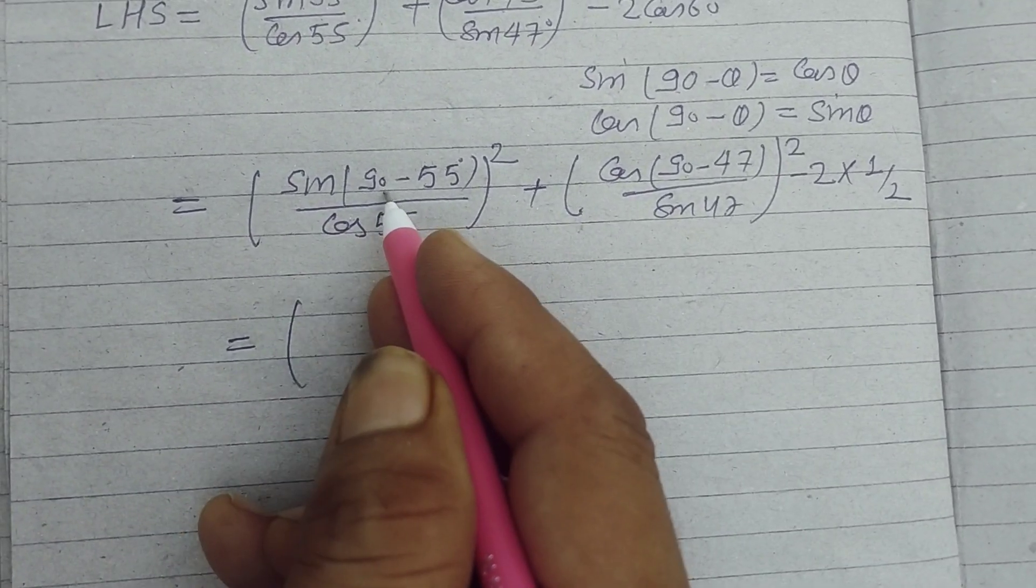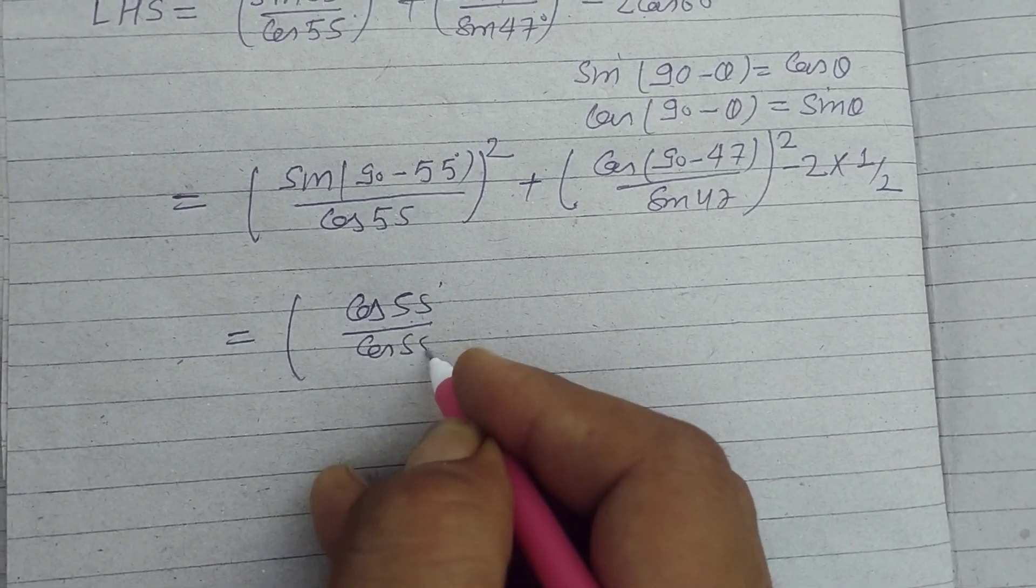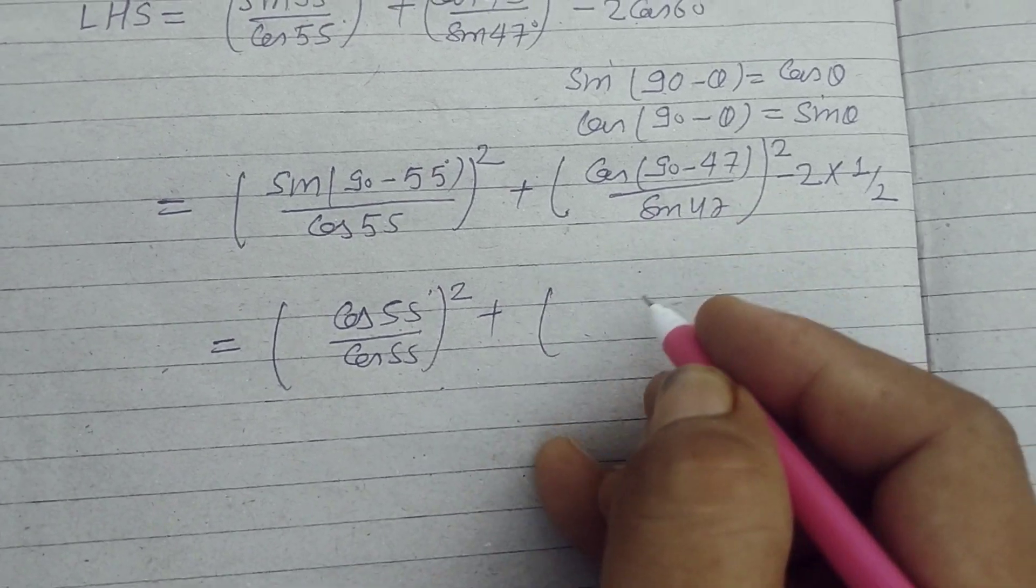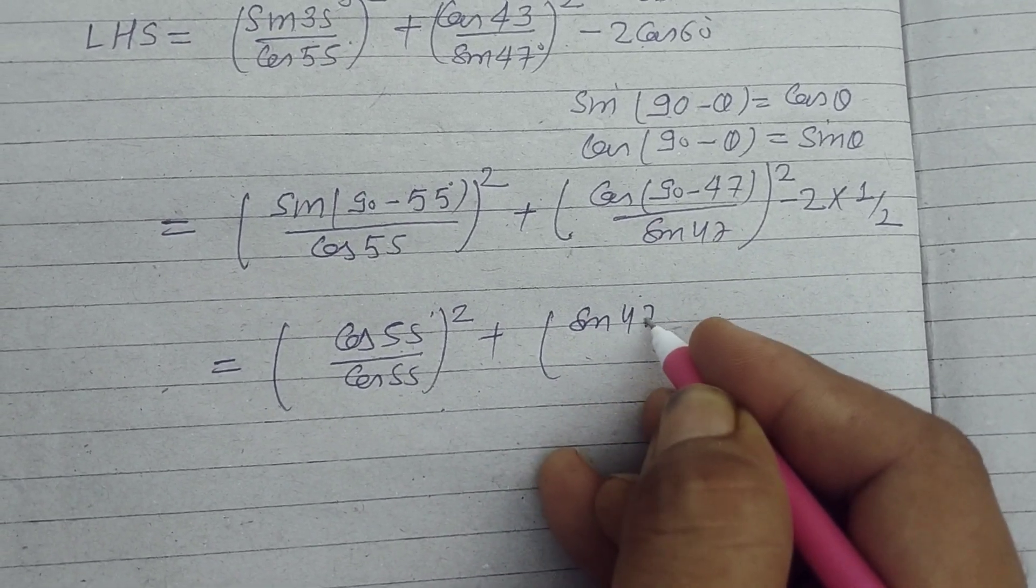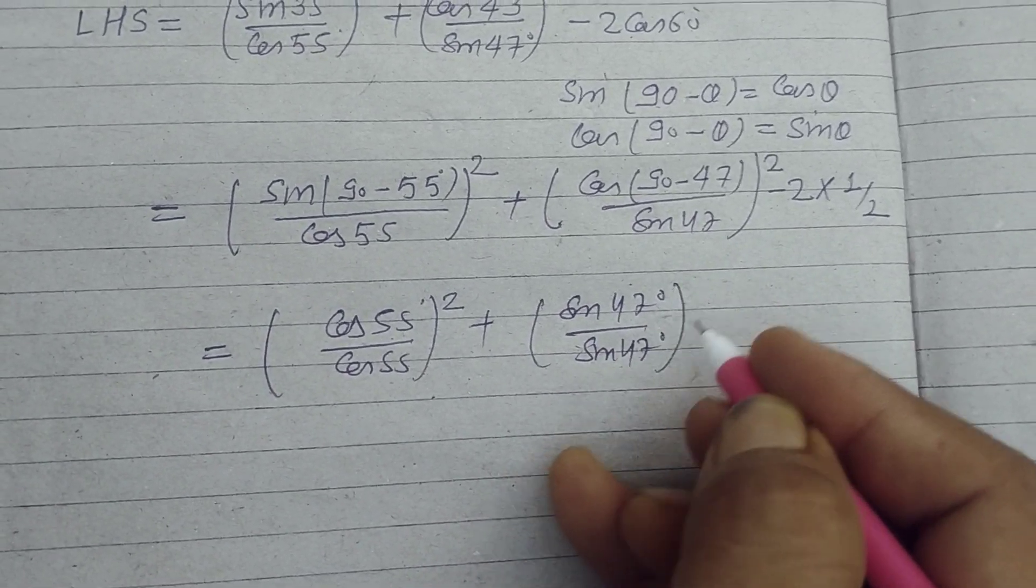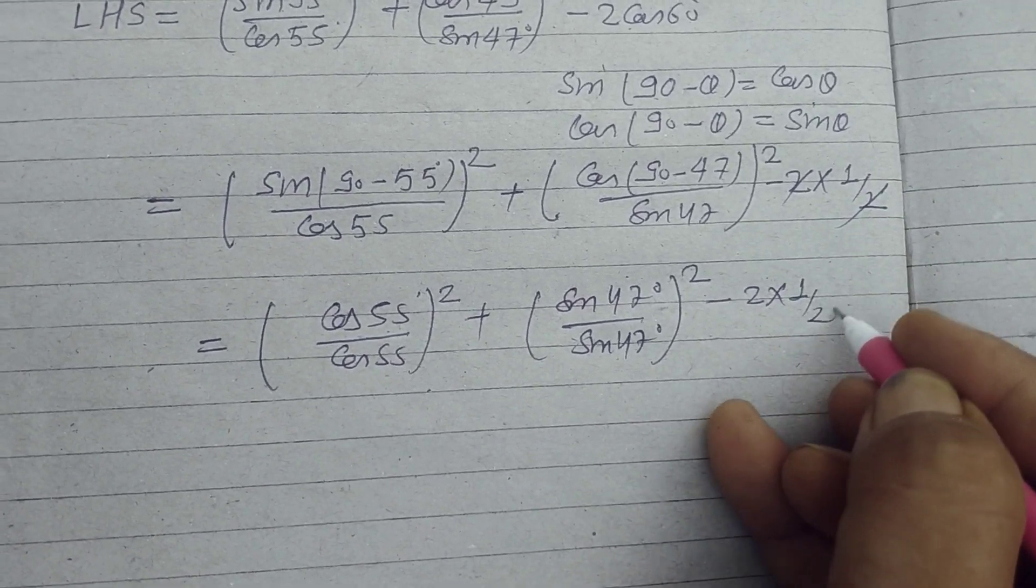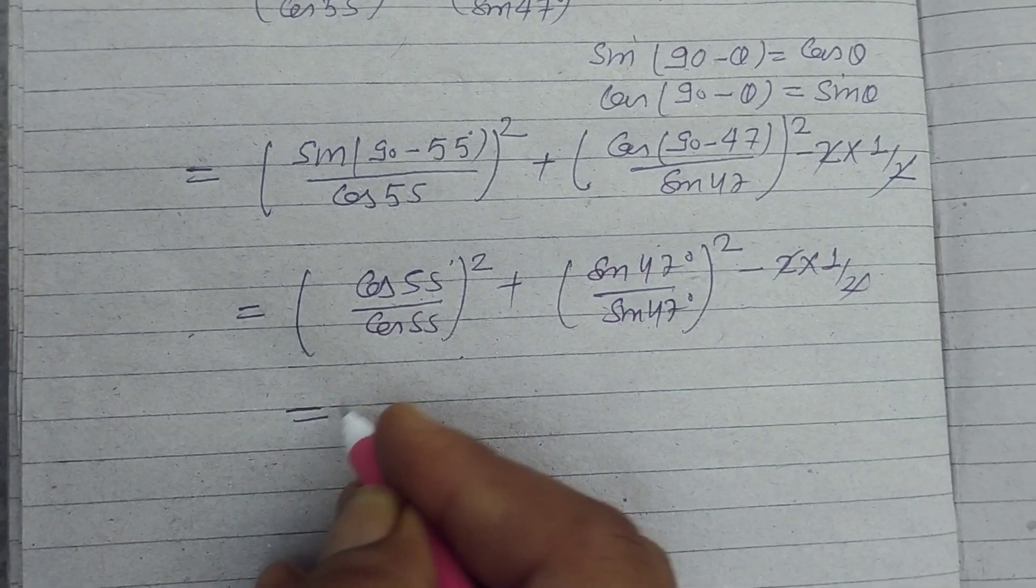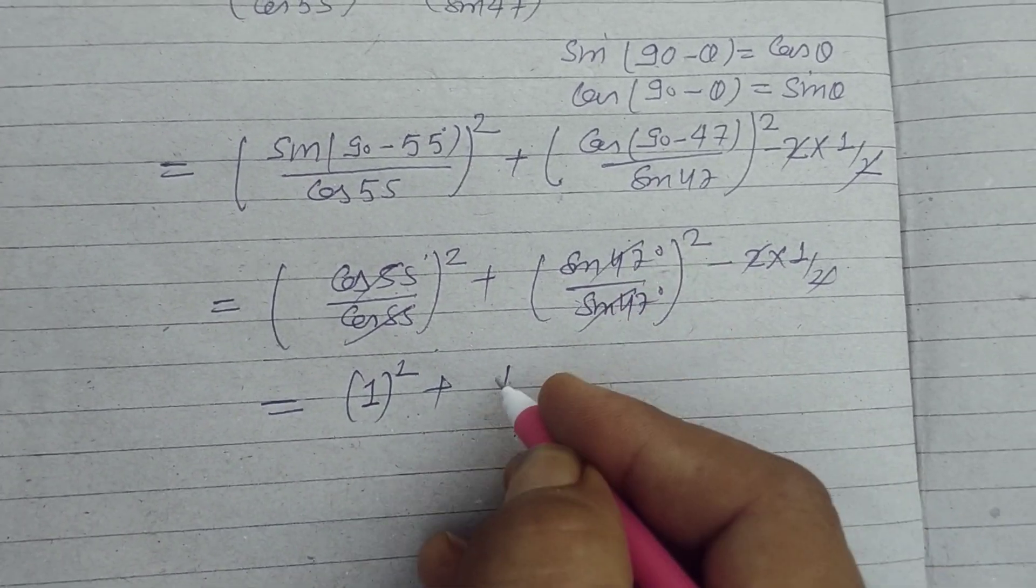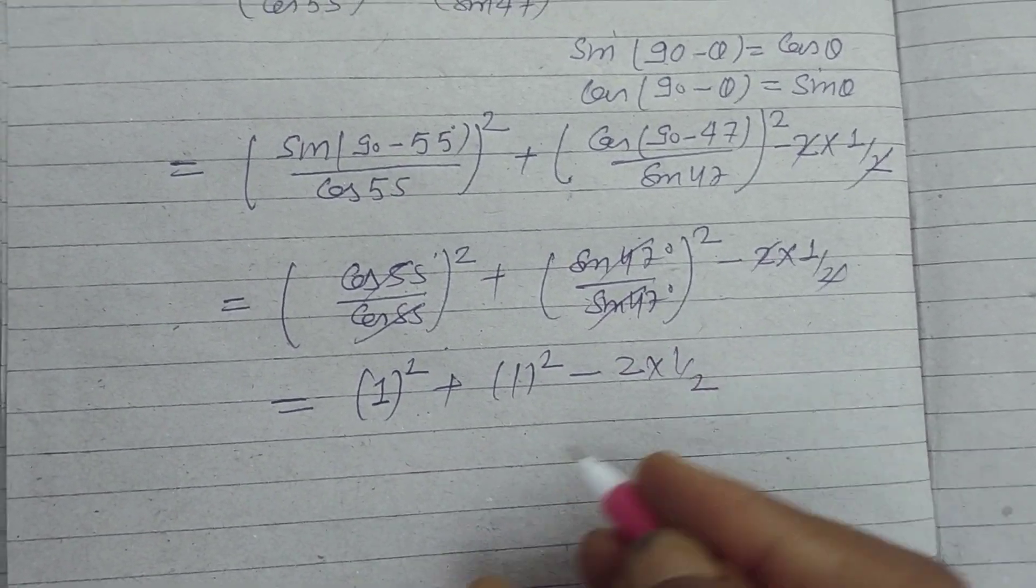Here sin(90° - 55°) equals cos 55°, so we get (cos 55° / cos 55°)² plus (sin 47° / sin 47°)² minus 2 by 2. So this is 1 whole square plus 1 whole square minus 2 into 1/2.